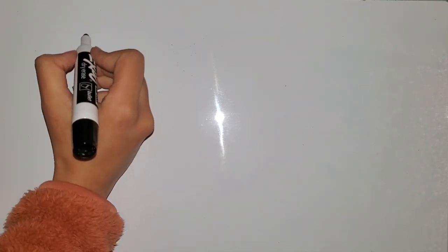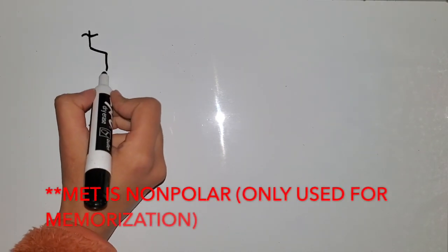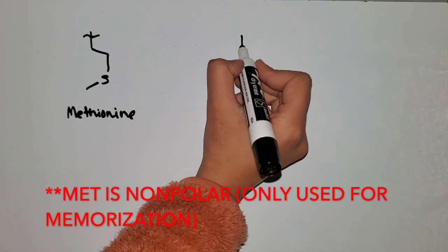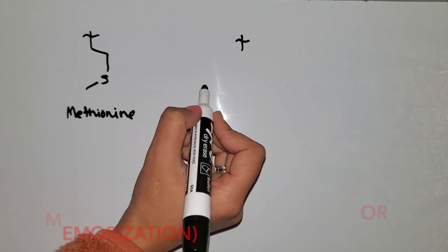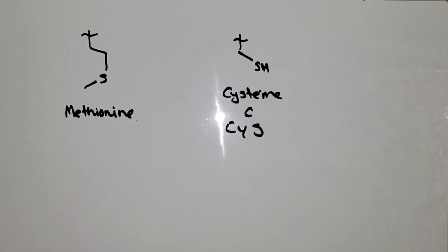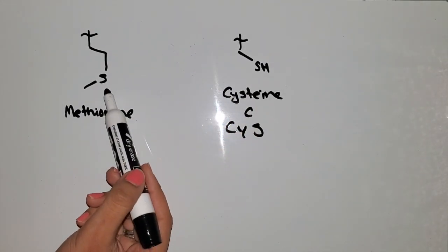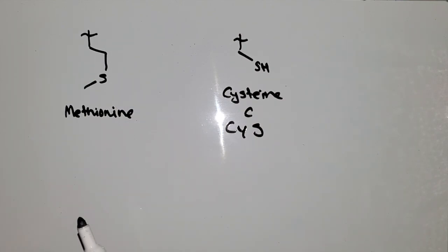The next pair is the only two amino acids that have a sulfur group. The one we already talked about is methionine, and the second one — which was an exception we discussed — is cysteine. Methionine has a thioether sulfur group and cysteine has a thiol group. Both are the only two amino acids that have sulfur in them.